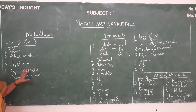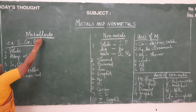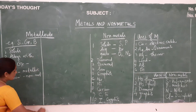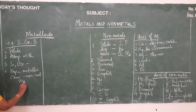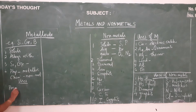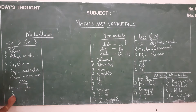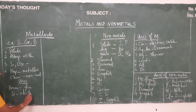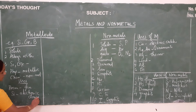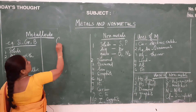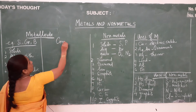That is all about metalloids. Uses of metalloids: boron is used in the fire industry and silicon is used in electronic devices. Next, we will see compounds.